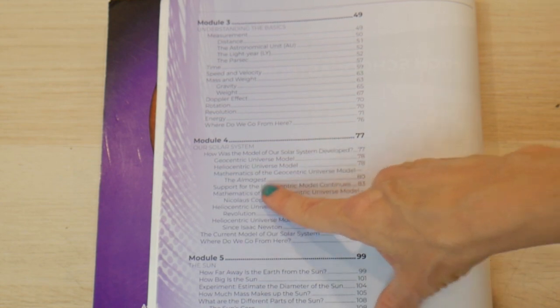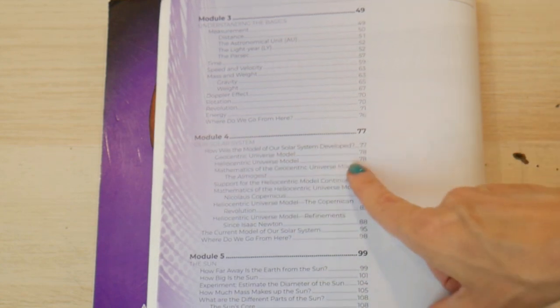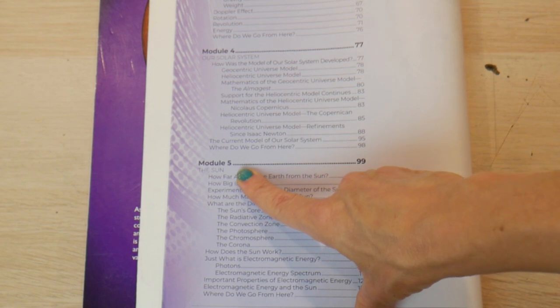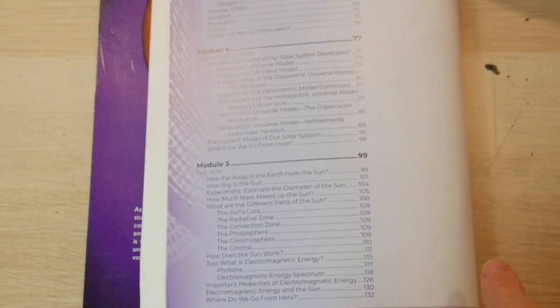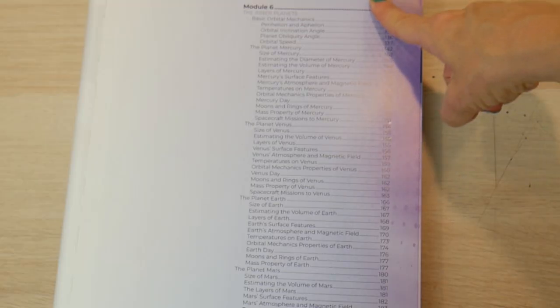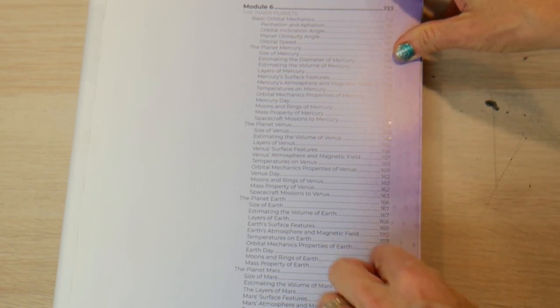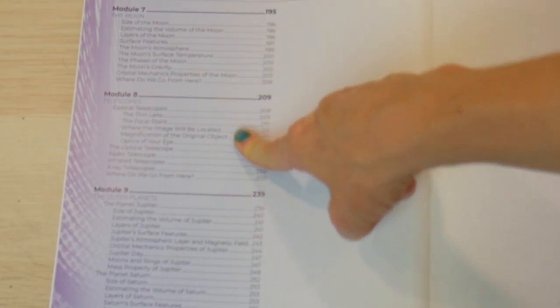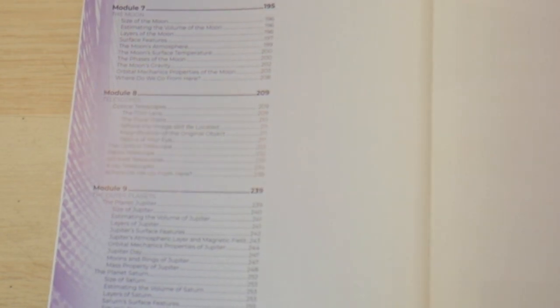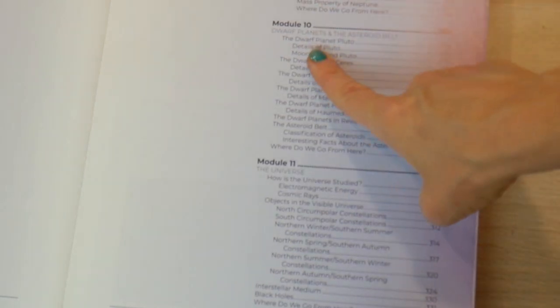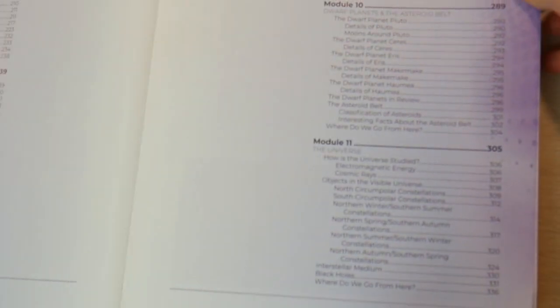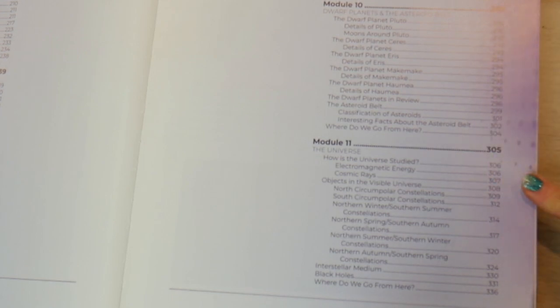We're going to get into our solar system and talk about all the different universe models through history. Module five gets into the Sun and the Moon and the planets. Module six is huge, it's basically the inner planets. Module seven is the Moon. Module eight is telescopes. Module nine is your outer planets. Module ten is your dwarf planets and the asteroid belt. And that's where you end the discussion of our solar system.